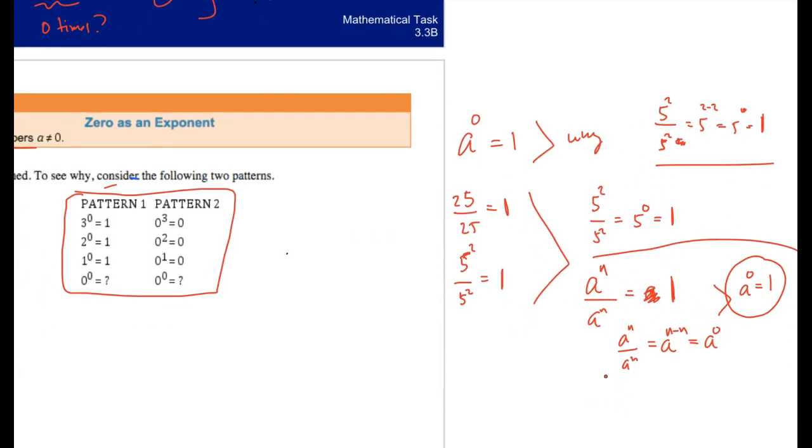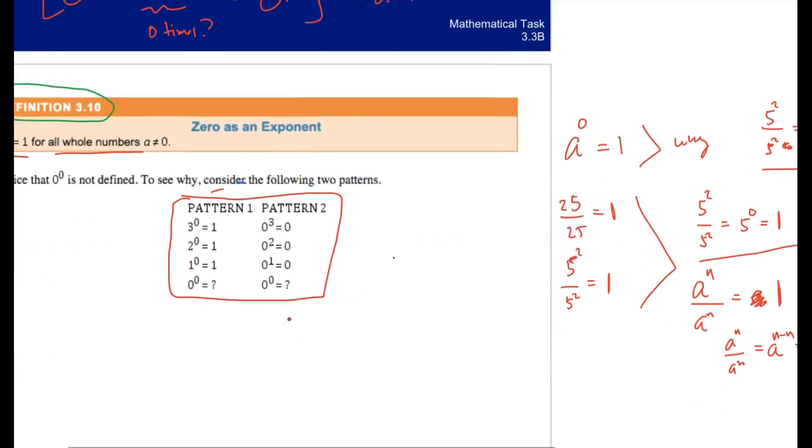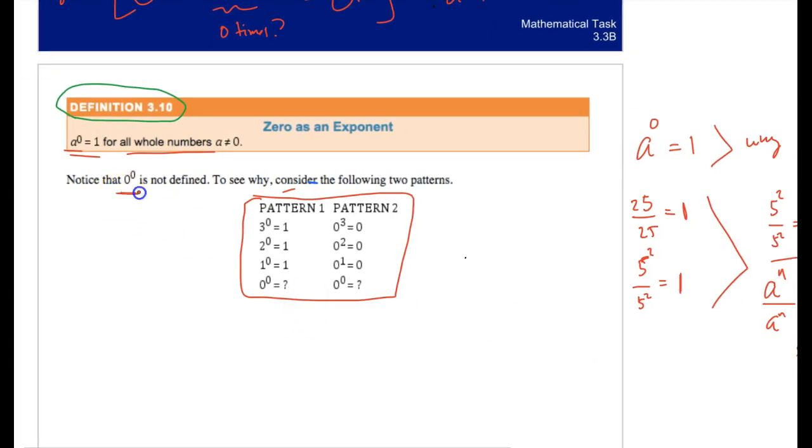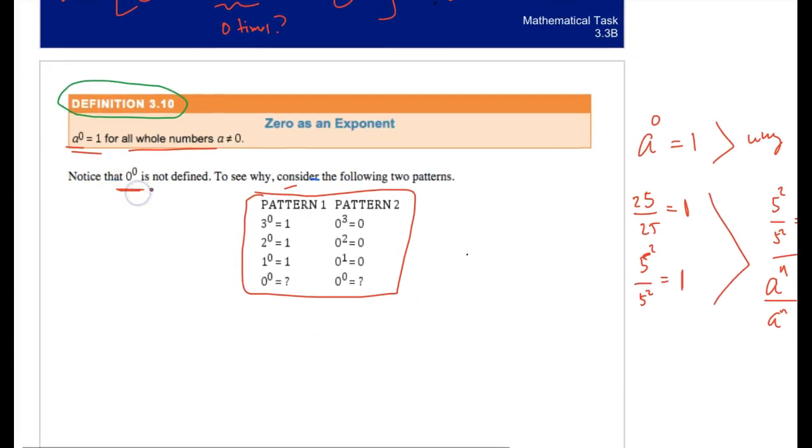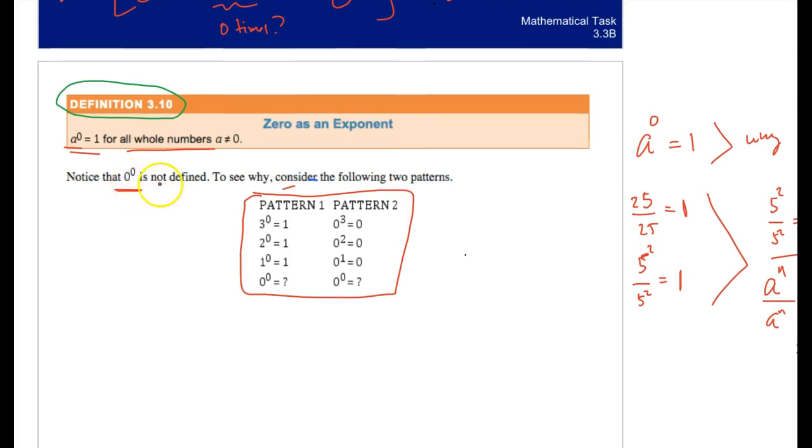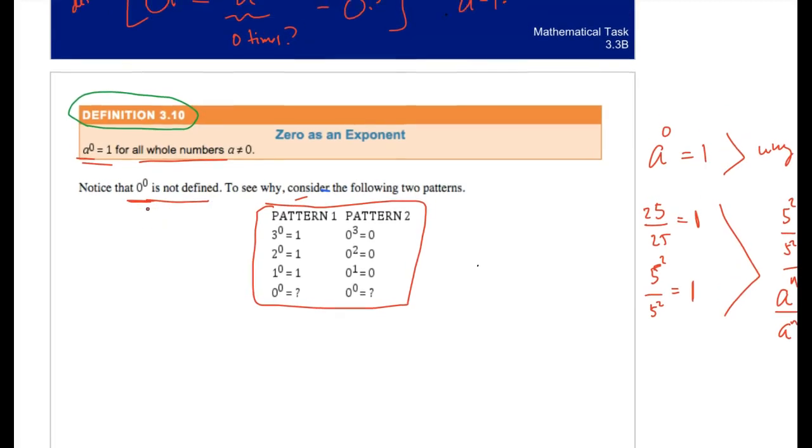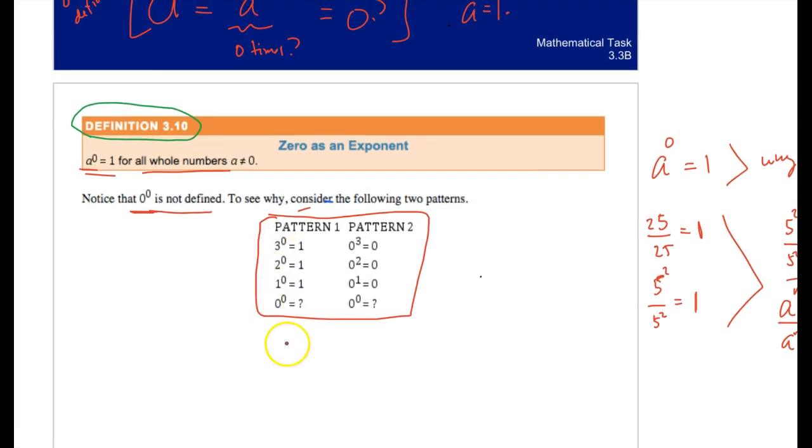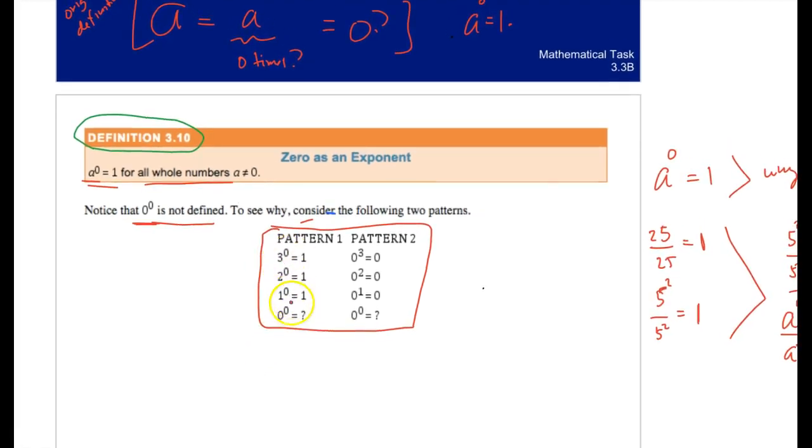If you have questions, ask me in class. That leads us to another situation here of why then is 0 to the power of 0 not defined. Why can't we get an answer for that? To see why, let's consider the following two patterns. 3 to the power of 0 is 1, 2 to the power of 0 is 1, 1 to the power of 0 is 1. So in this one, you would think just based off of this pattern here, you would be guessing that any to the power of 0 is 1, so you would think that then this is 1.